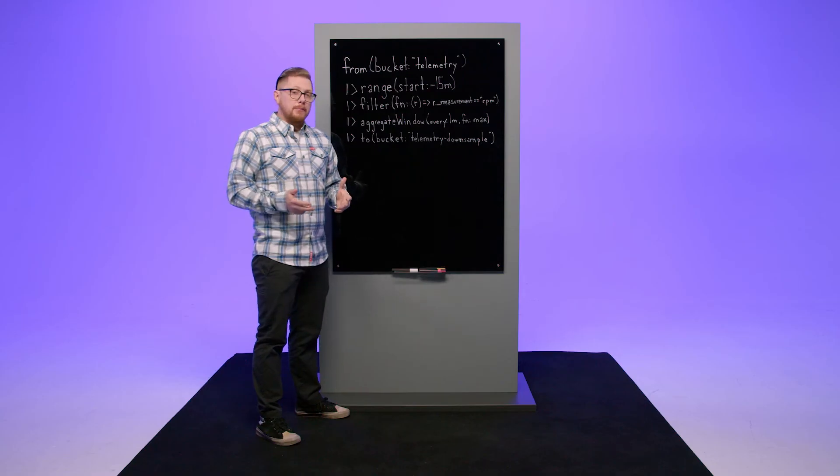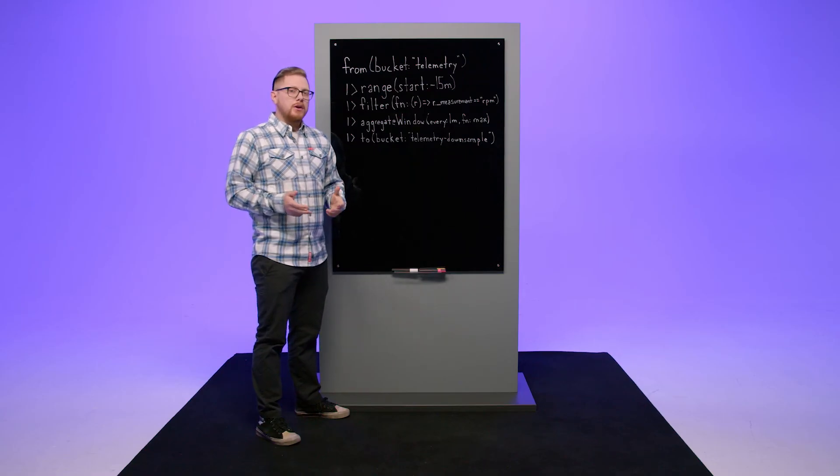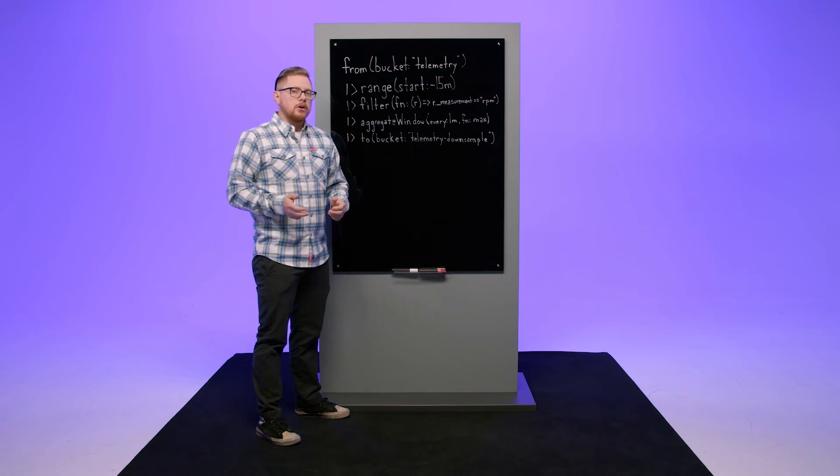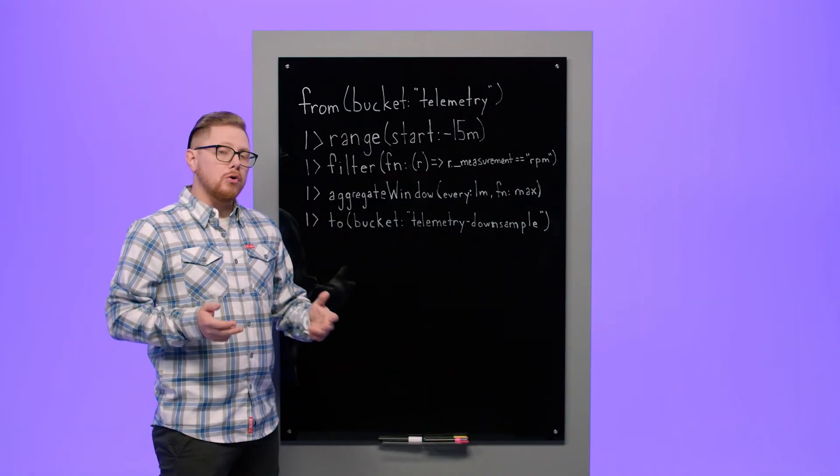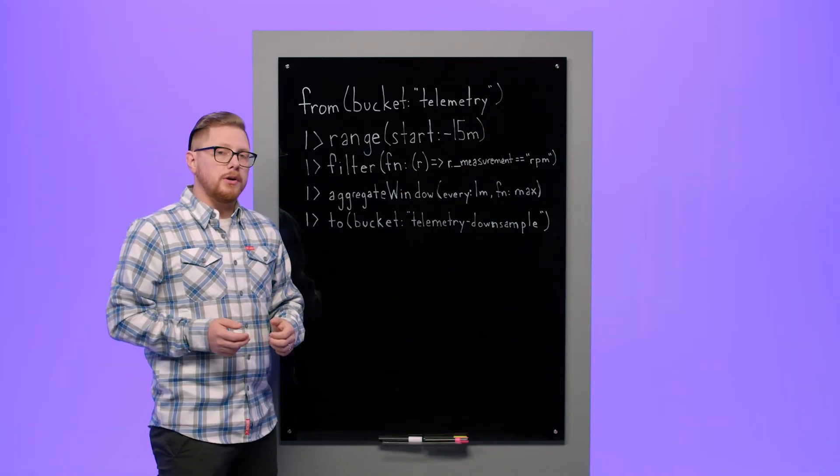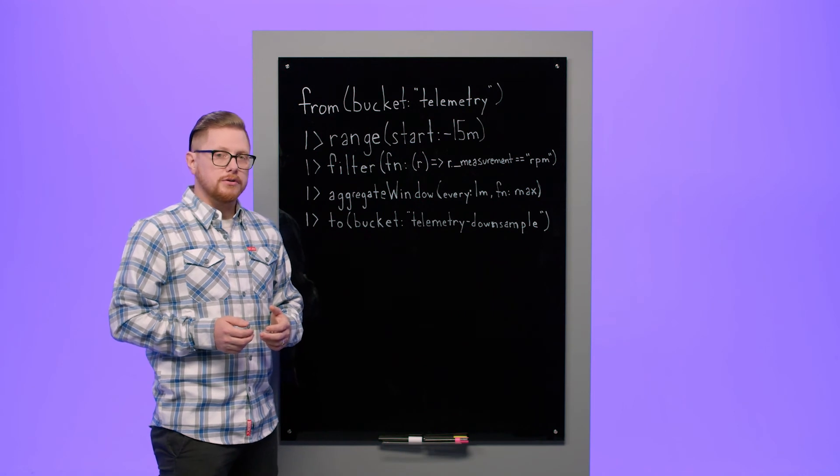Now that we have our data in a more manageable set, we can think about what we want to do with the data. How do we want to transform it? Flux has a rich standard library with many of the most common transformations you'll want to do on your data. For instance, maybe you want a rolling average over a 15 minute window, or maybe you'd like to divide your data into quantiles.